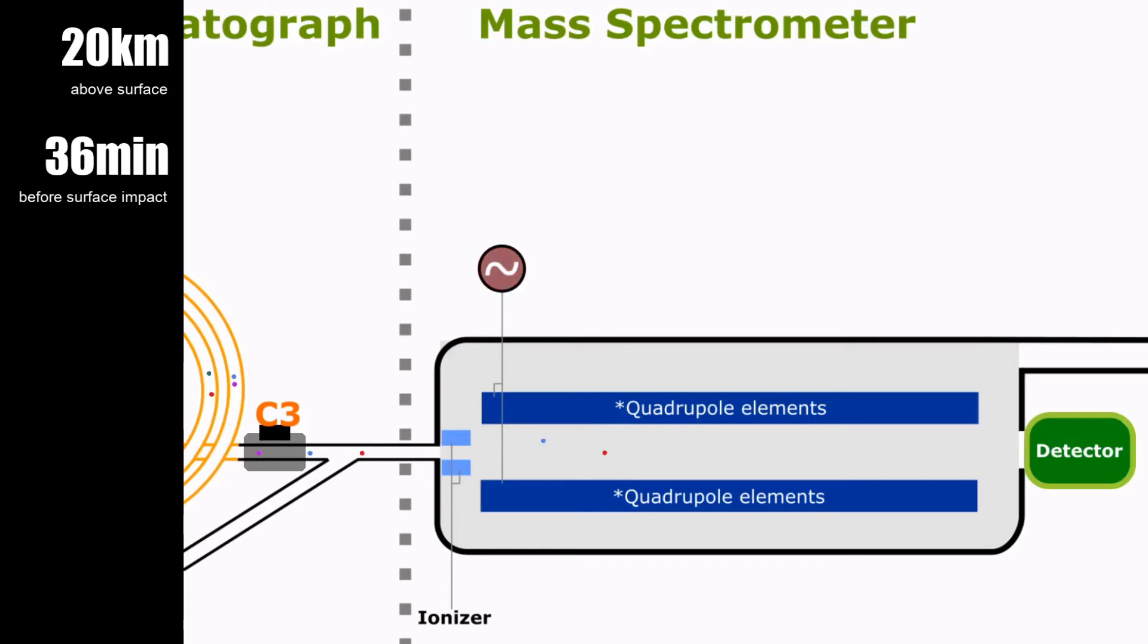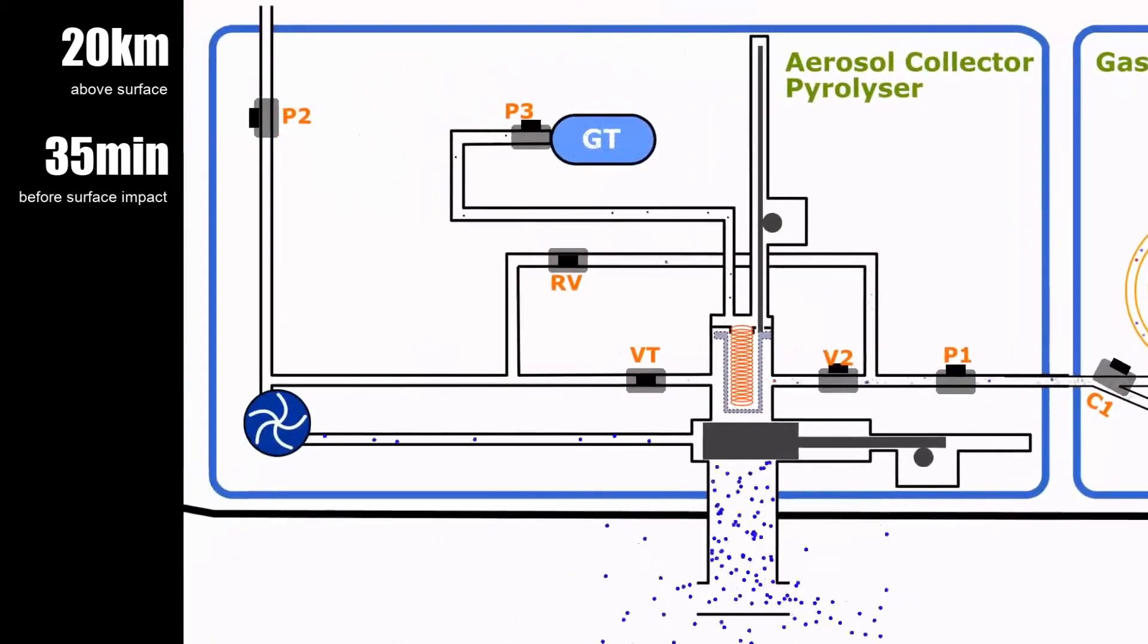Molecules of different masses will accelerate differently when subjected to the same force. This is a simplified description of the quadrupole mass spectrometer. At the end of this chain of instruments, we are able to determine the molecular composition in the gas product which originally came from performing pyrolysis on the aerosol from the atmosphere. This entire process takes about 10 minutes to complete, 35 minutes before surface impact.